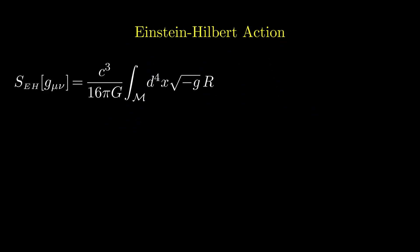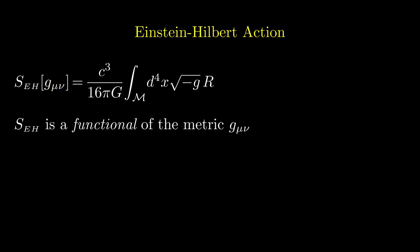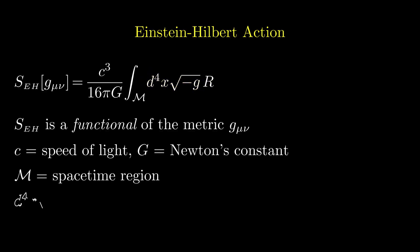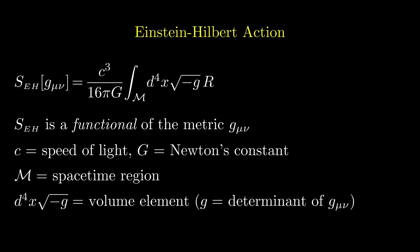This is the Einstein-Hilbert action. The square bracket notation tells us that the action is a functional of the spacetime metric. The constants on the right-hand side include the speed of light, C, and Newton's gravitational constant, G. The integral extends over a region M of spacetime. The spacetime volume element is d4x times the square root of minus G, where G is the determinant of the metric. Finally, R denotes the scalar curvature.